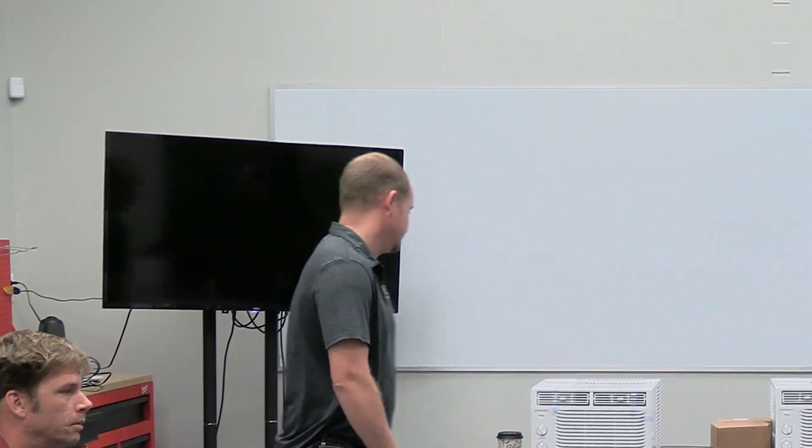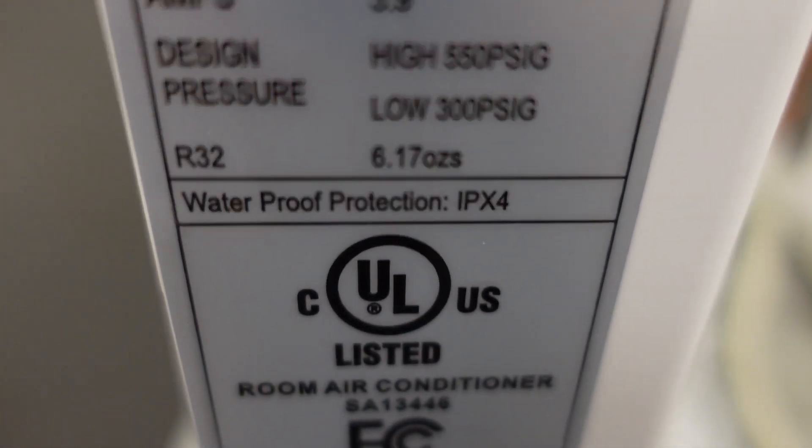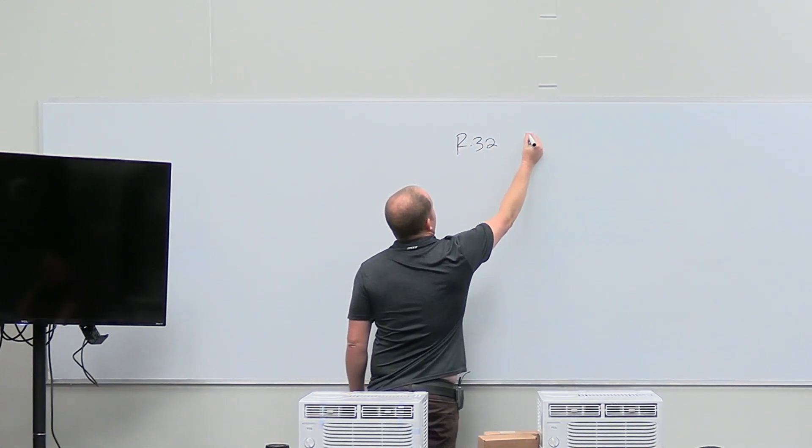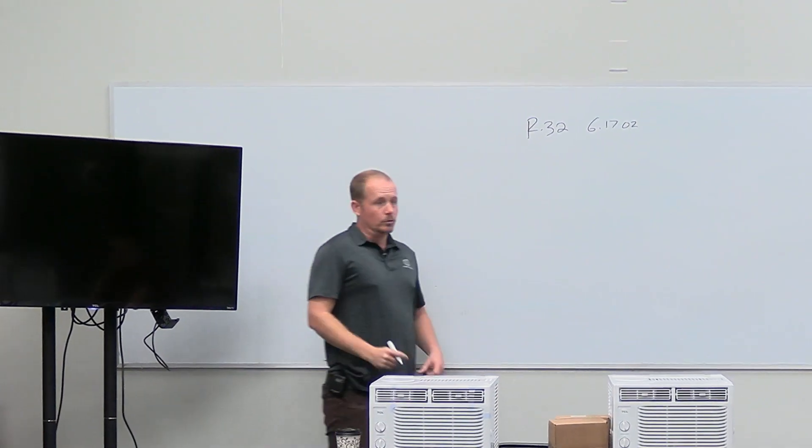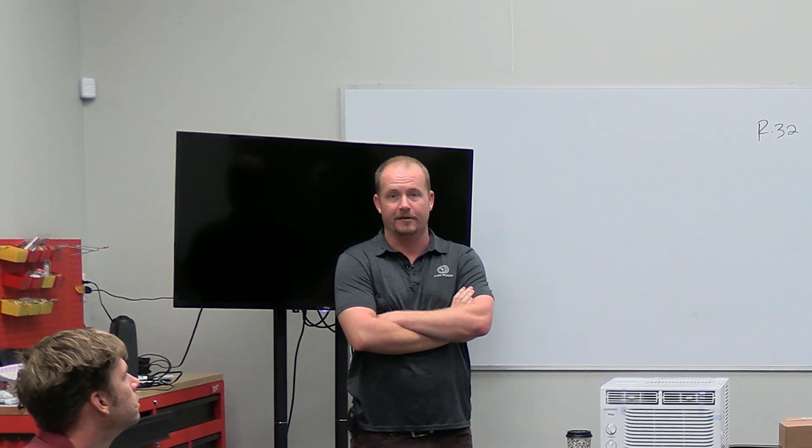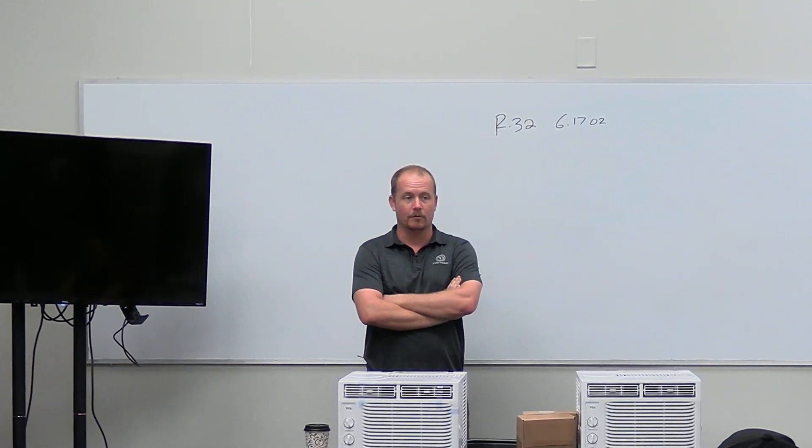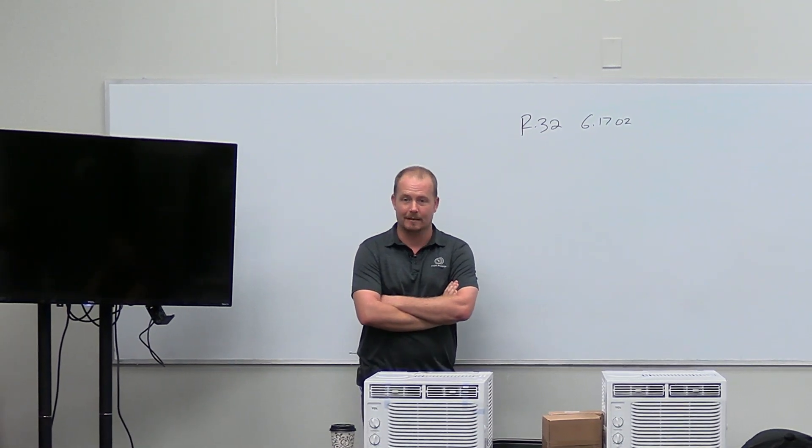These come with a factory charge in them. Anybody care to tell me what the factory charge is on the data plate there? R32, 6.17 ounces. There are rules in the U.S. about how much of this type of refrigerant can be in the equipment. This type of refrigerant is a flammable refrigerant. More specifically, it is what is called a mildly flammable refrigerant. It is an A2L.